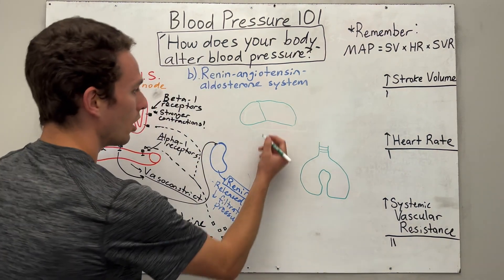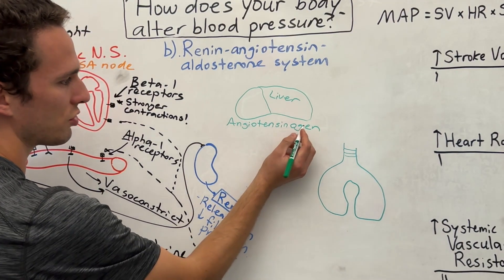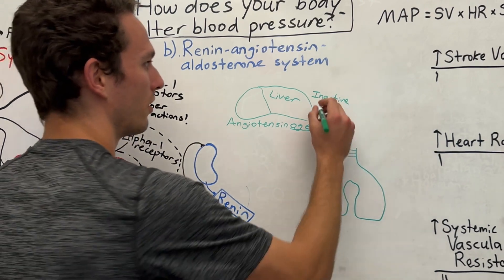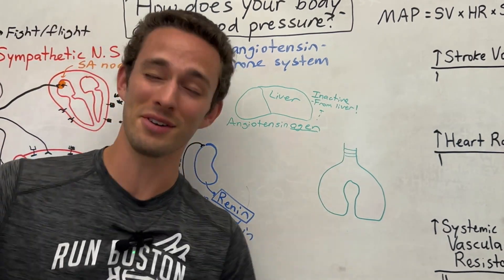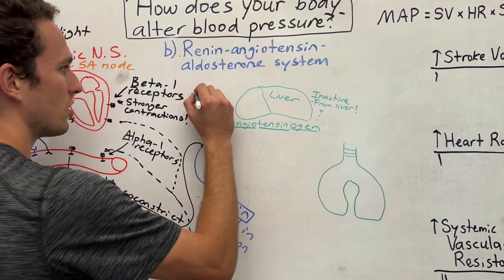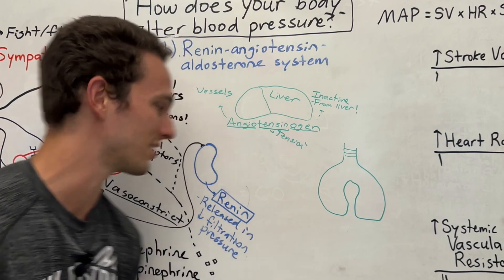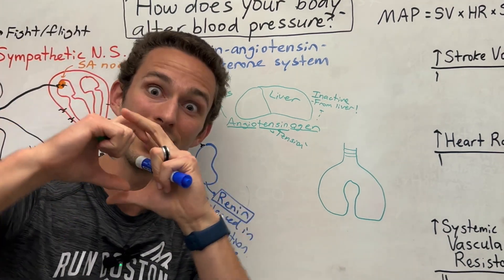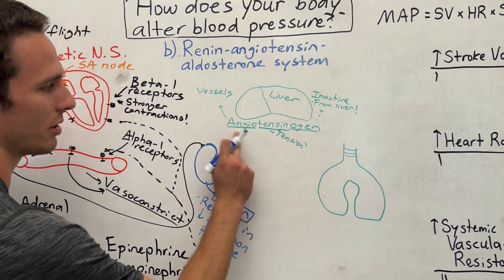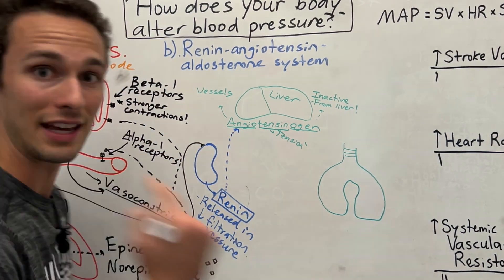The liver will be secreting what's called angiotensinogen into the bloodstream. When you see 'ogen,' it means it's inactive and it came from the liver — the liver likes to secrete inactive things that get activated later. The first part, 'angiotensin': angio means blood vessel and tensin sounds like tension, so angiotensin will eventually tense up — constrict — the blood vessels. Renin coursing through the bloodstream will activate angiotensinogen into angiotensin-1. But angiotensin-1 really doesn't do a whole lot, so it needs an extra kick by the lungs, which produce angiotensin converting enzyme — ACE — which converts angiotensin-1 into angiotensin-2.